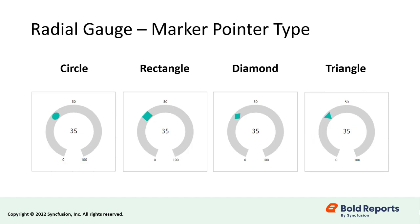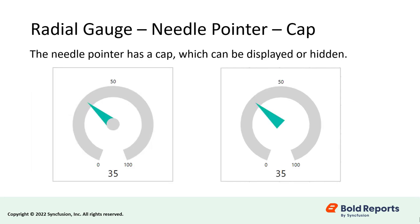The marker pointer has a variety of marker styles that can be used, including circle, rectangle, diamond, and triangle. The needle pointer has a cap, which can be displayed or hidden.